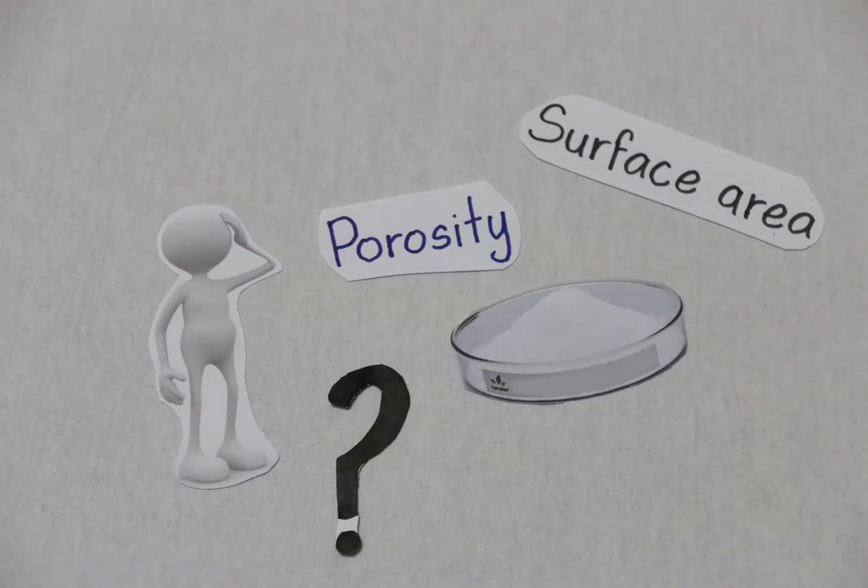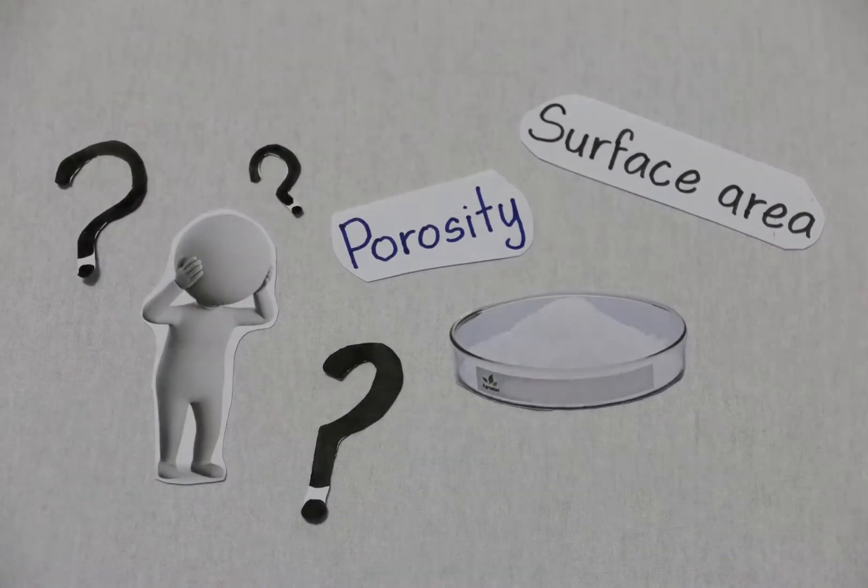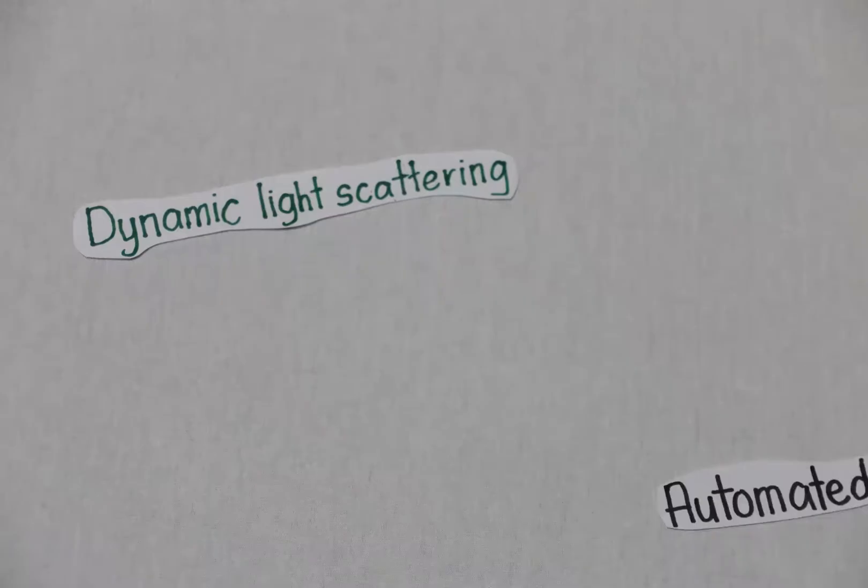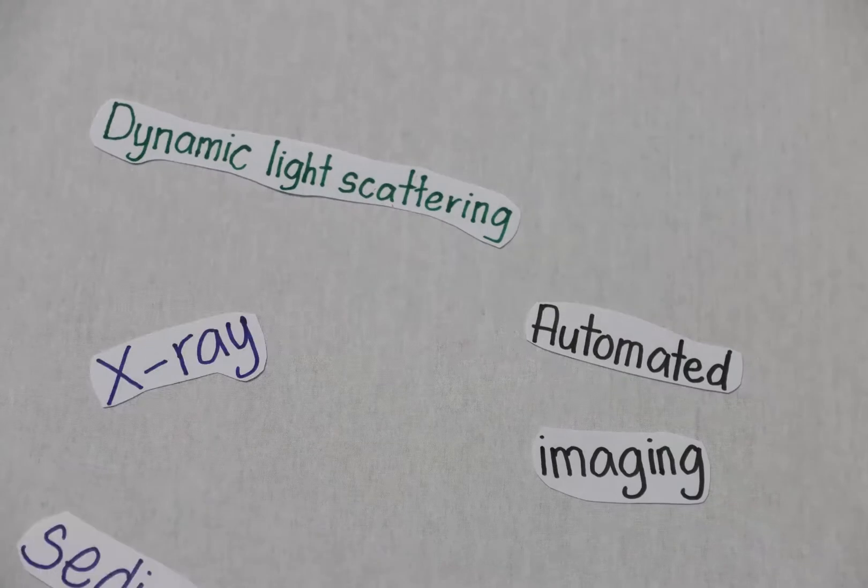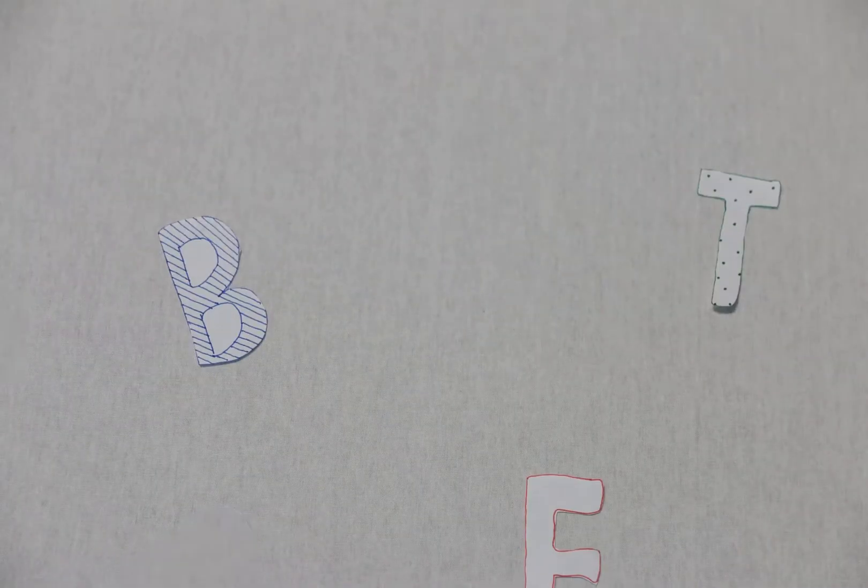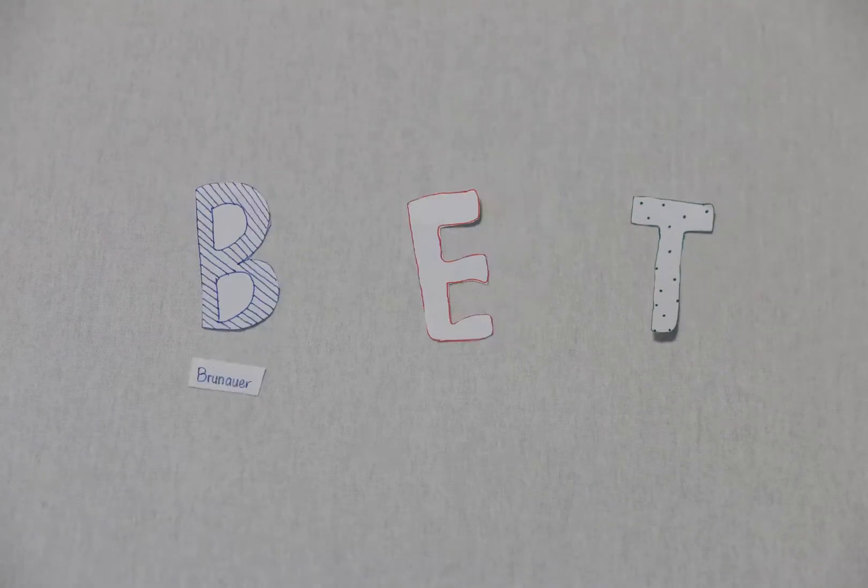Measuring surface area and porosity of powders is difficult. There are few techniques available, but none of those are straightforward. The choice for surface area measurement generally comes down to a technique known as BET.